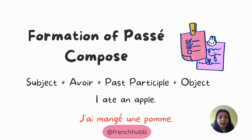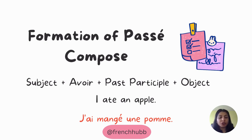So again: subject plus the conjugated form of avoir — that is 'j'ai' because the subject is 'je' — plus the past participle, which is 'mangé' (that is 'e' with an accent), plus the object, which is 'une pomme'.